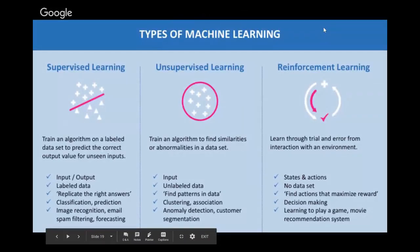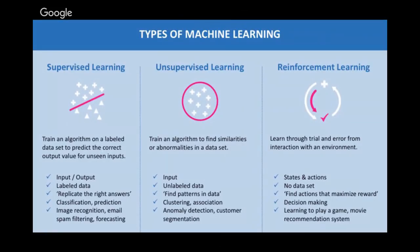In machine learning, we have three types. The first is supervised learning, where we provide the model both the input and the output.